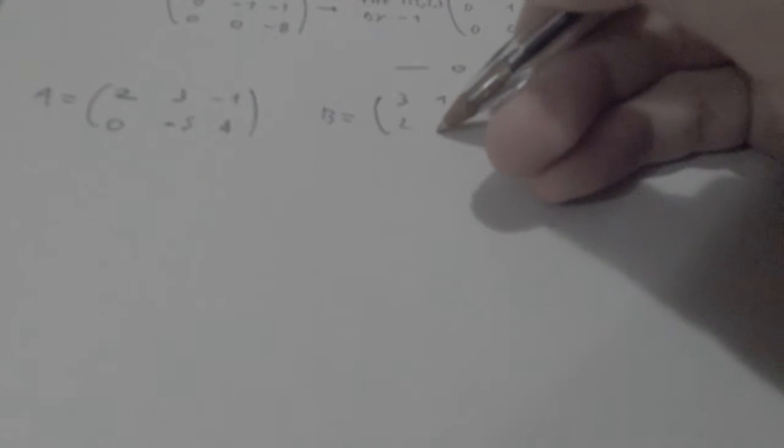And we have a matrix B which is 3, 1, 0, 2, 3, negative 1, and we want to find our matrix C, which is basically A plus B.